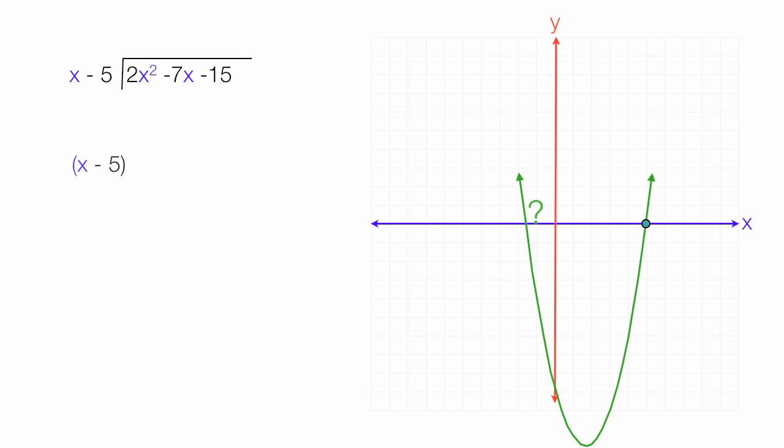Most of the times, you see factoring like this: x minus 5 times some other factor is equal to 2x squared minus 7x minus 15. In this case, we're trying to determine the unknown factor.